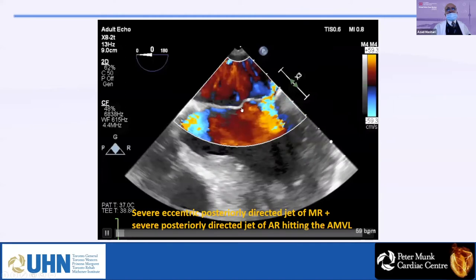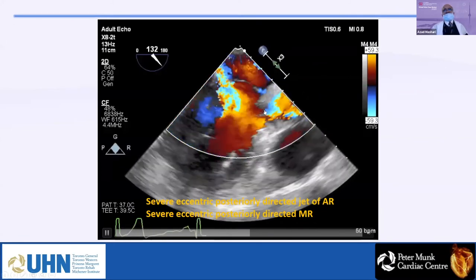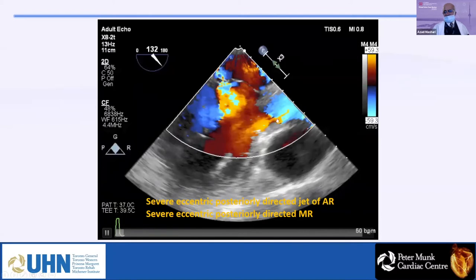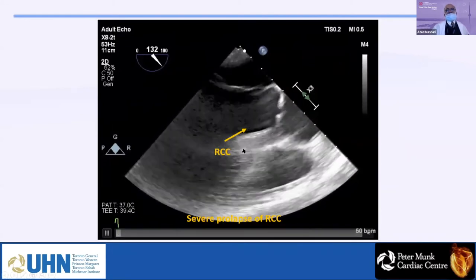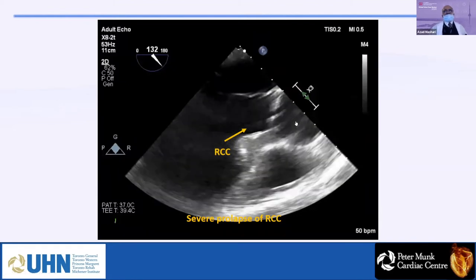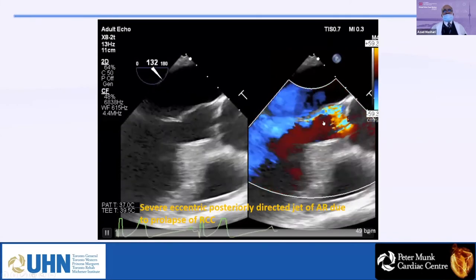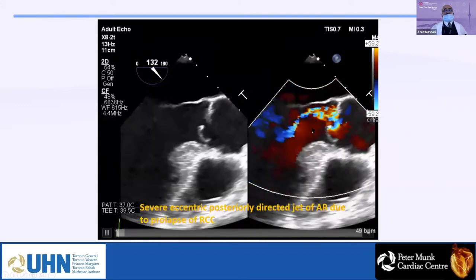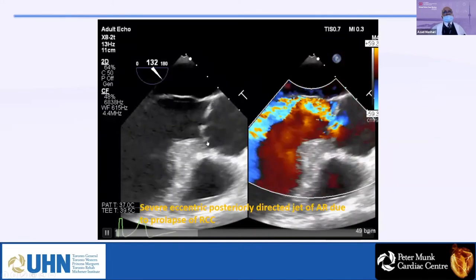This AR is very eccentric and is hitting the mitral valve. In the long axis view, you can see the severe eccentric posterior-directed jet of AR hitting the mitral valve. Without color, you can see the prolapse of the right coronary cusp. The direction of the AR jet helps diagnose which leaflet is prolapsing — a posterior-directed AR shows the prolapse is mainly in the right coronary cusp.